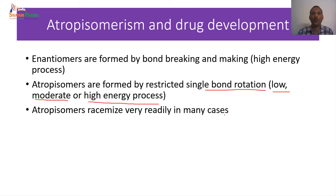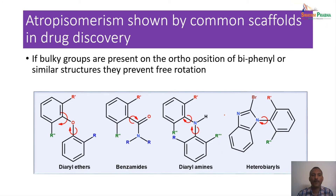Here are some common scaffolds used in drug discovery. If bulky groups are present at the ortho position of biphenyl or similar structures, they prevent free rotation. Four different scaffolds are shown: diaryl ether, benzamide-substituted benzamides, diaryl amines, and hetero biaryl systems. All these compound types show atropisomerism. We will look at each case one by one.